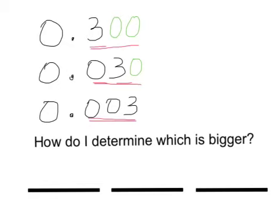Then what I can do is pretend that the decimal isn't here. And I'm going to see which of these numbers is the largest one. Well, three hundred is bigger than thirty, which is bigger than three.